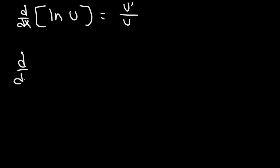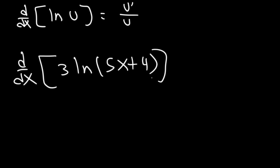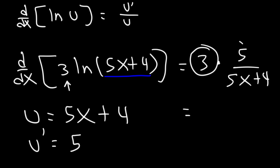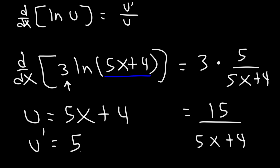Try this one: find the derivative of 3 times the natural log of 5x plus 4. Here u is 5x plus 4, and u prime is the derivative of 5x plus 4. The derivative of 5x is 5, and the derivative of the constant 4 is 0, so u prime is 5. We have a constant in front, so it's 3 times u prime over u, which is 3 times 5 divided by 5x plus 4. Multiplying 3 times 5 gives 15, so the answer is 15 over 5x plus 4.